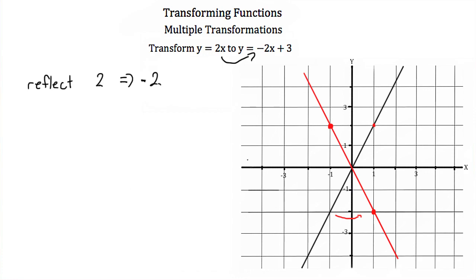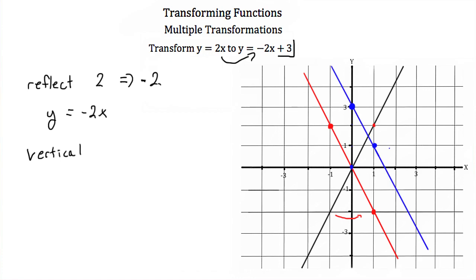Now that we have the reflection giving us y is equal to negative 2x, we need to apply the plus 3 with a vertical transformation. We take several points on the red line and move up 3. Starting at the origin, we move up 3. At point (1, -2), we move up 3. We connect the dots and get a graph that looks like that — this blue line is our graph of y is equal to negative 2x plus 3. That completes our multiple transformations of y is equal to 2x.